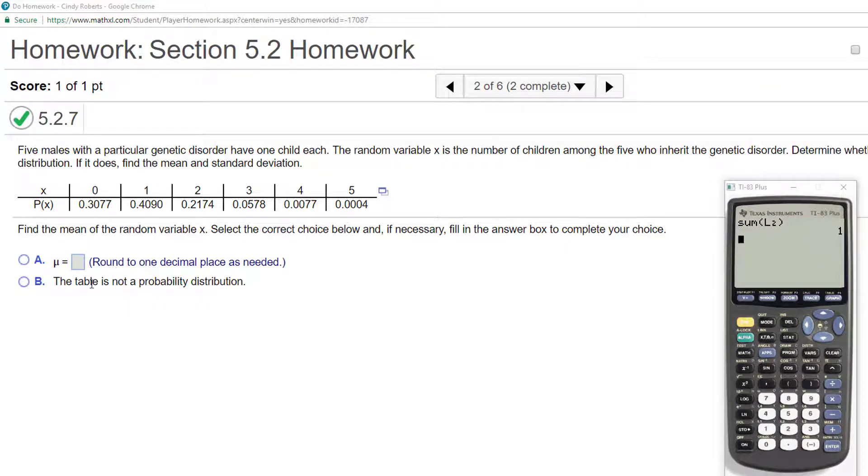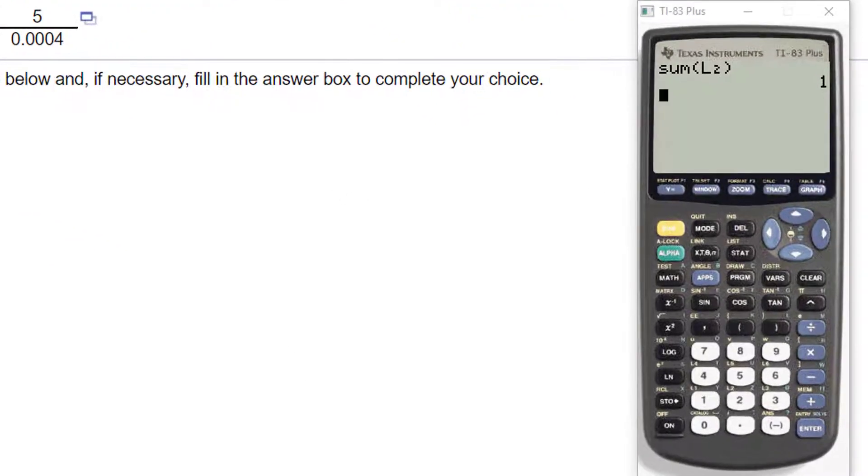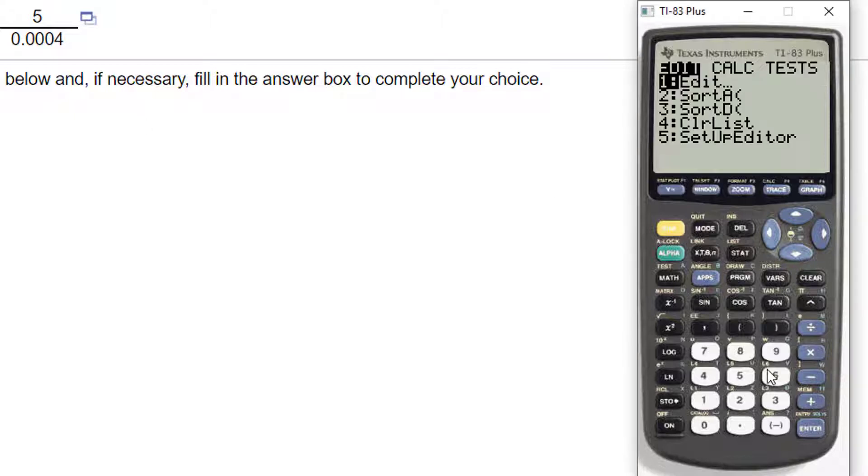All right. So how do you find the mean? Now that we know that this is a probability distribution, the mean, you take each value and you multiply it, each random variable and you multiply it by its probability. And then you add them all up. Well, let's let the calculator do it.